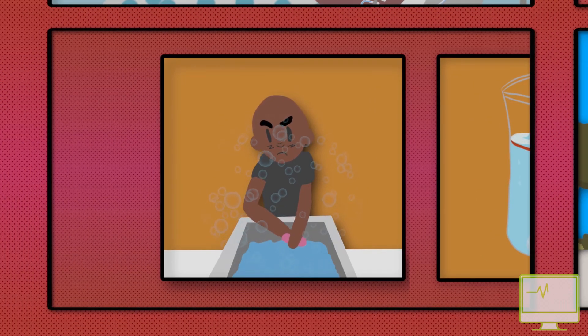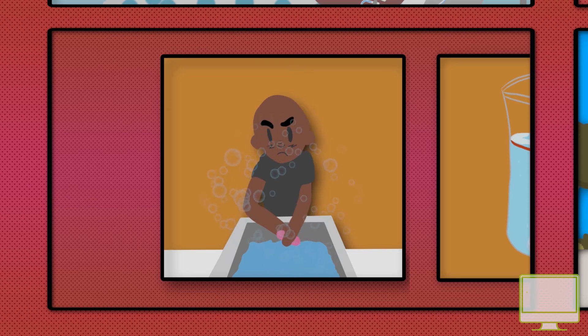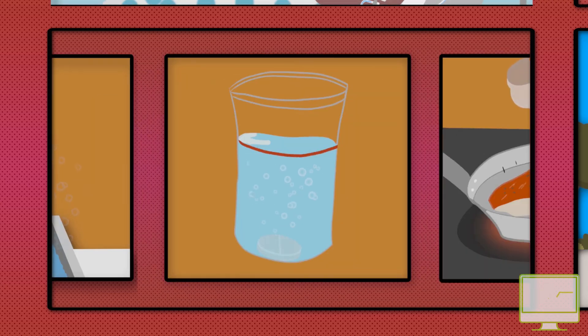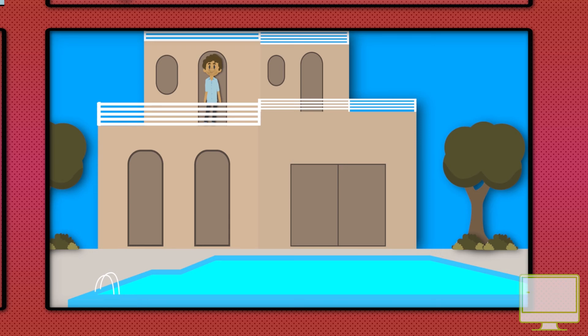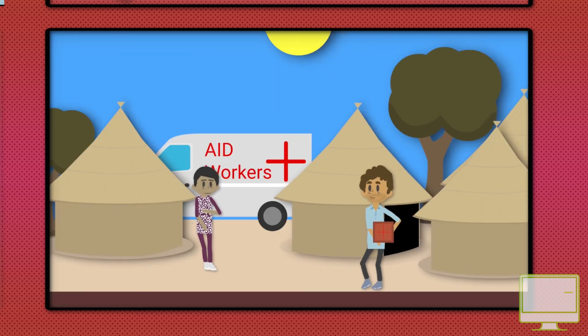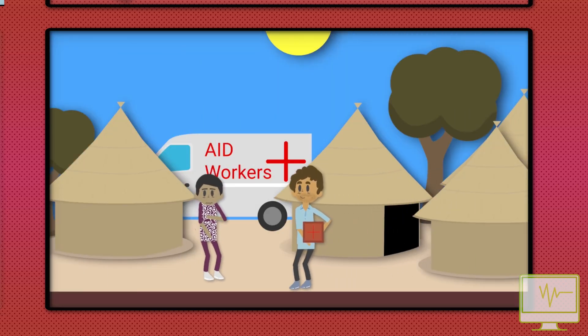All travellers should practice good personal hygiene including hand washing, water purification where necessary and good food hygiene. Travelling to areas with poor sanitation during outbreaks or crowded areas such as refugee camps put the traveller at the highest risk.